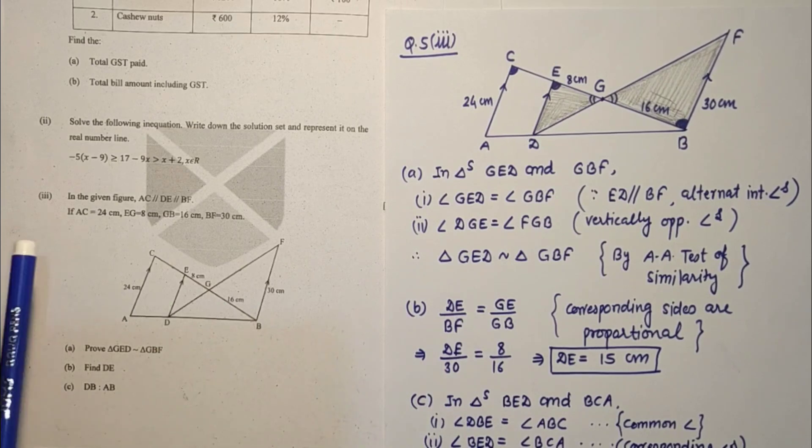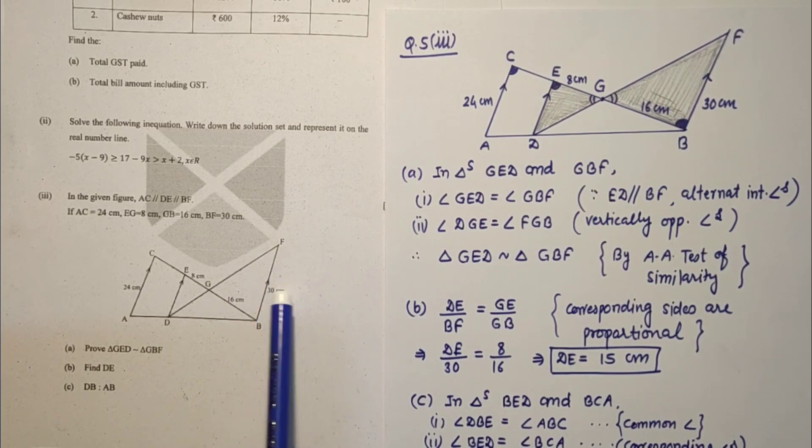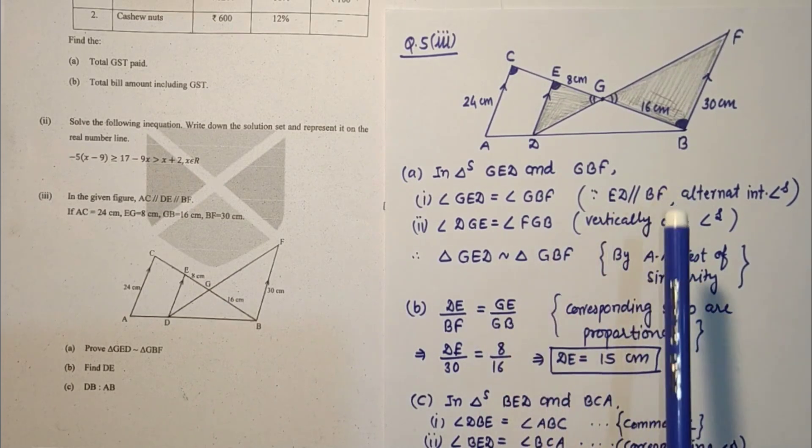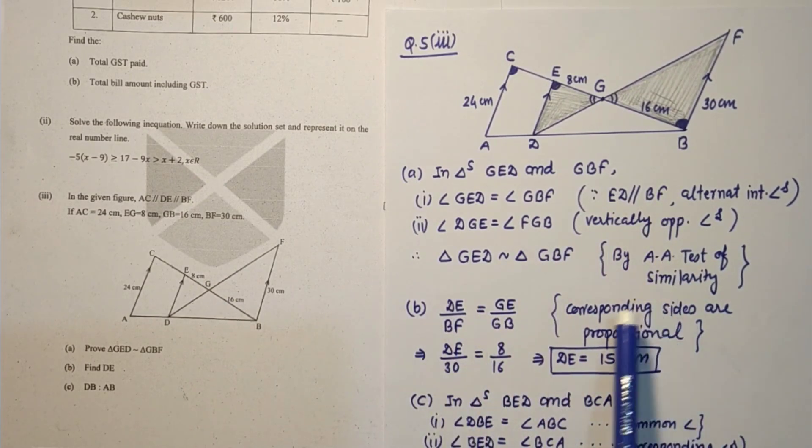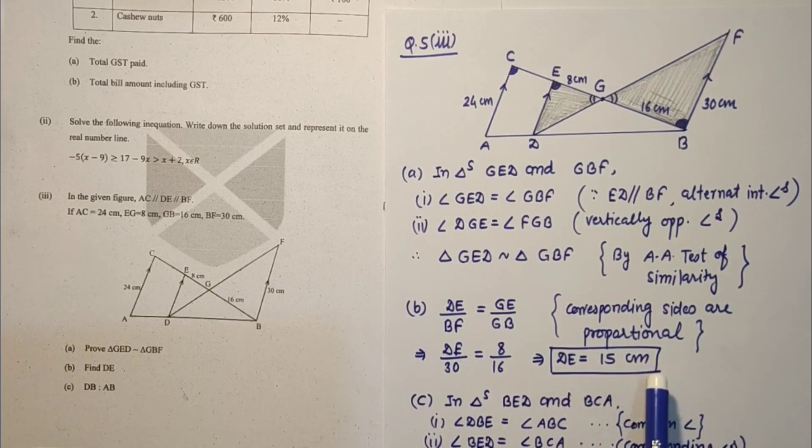Question 5 third sub part. This is the diagram given, the data given. BF is 30 and this is 24, 8, 16. We have to prove that these two triangles are similar. By AA test of similarity we proved that, and corresponding sides are proportional. So DE by BF is GE by GB. Substitute the values given, you get DE as 50 cm, the first answer.